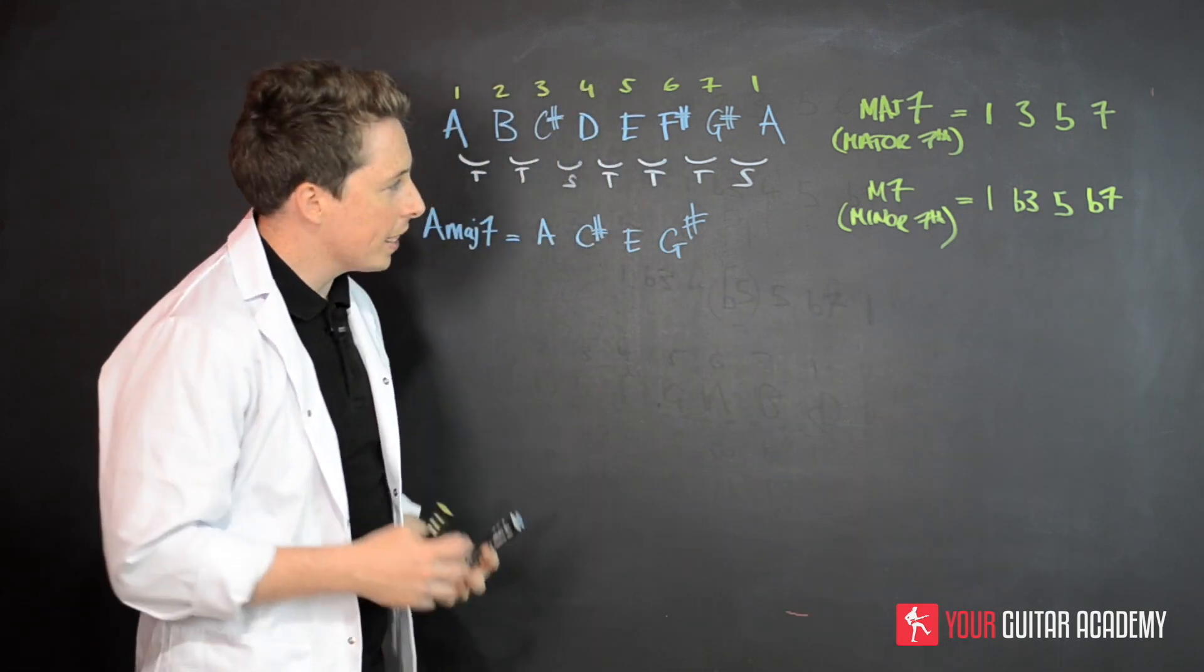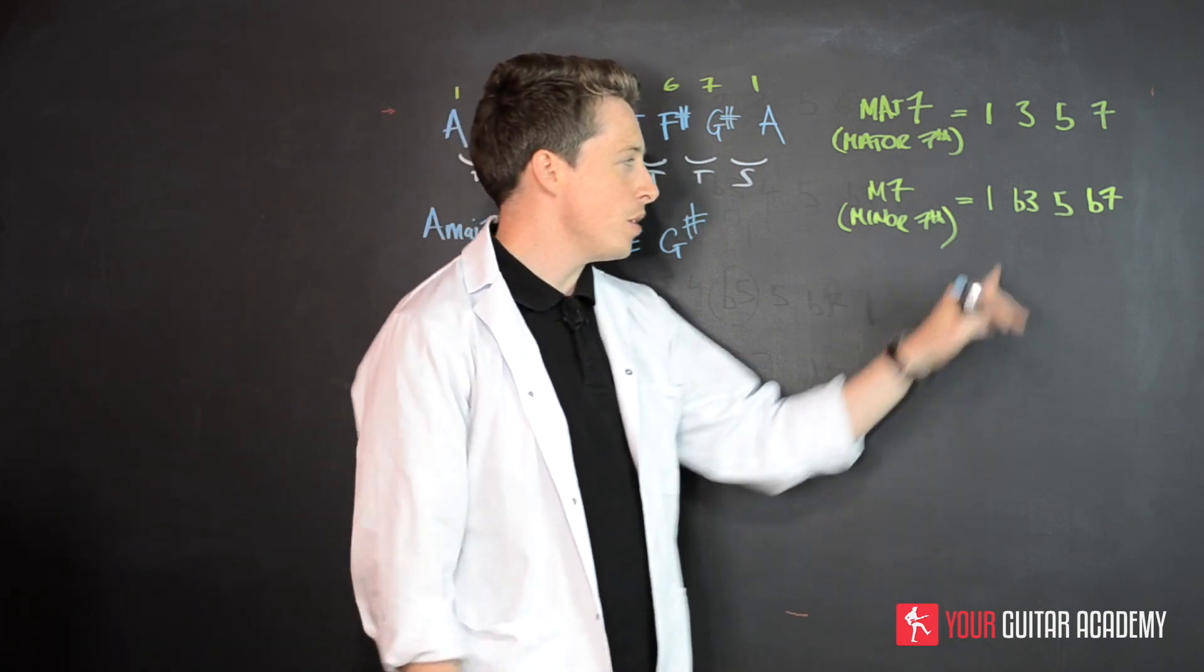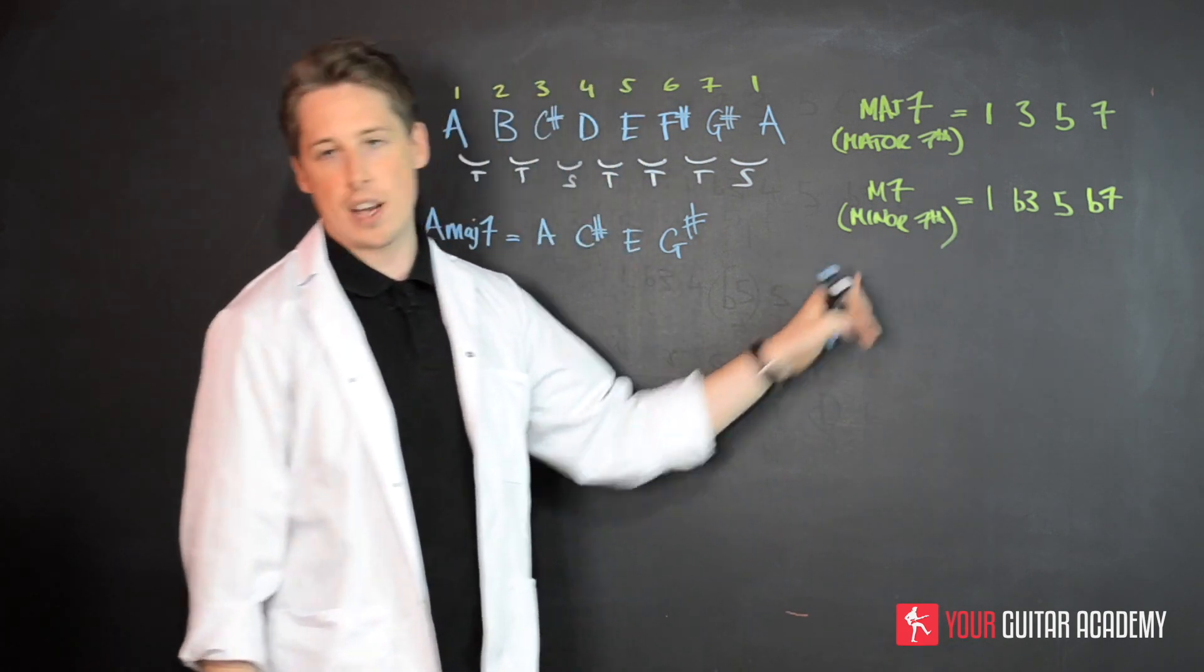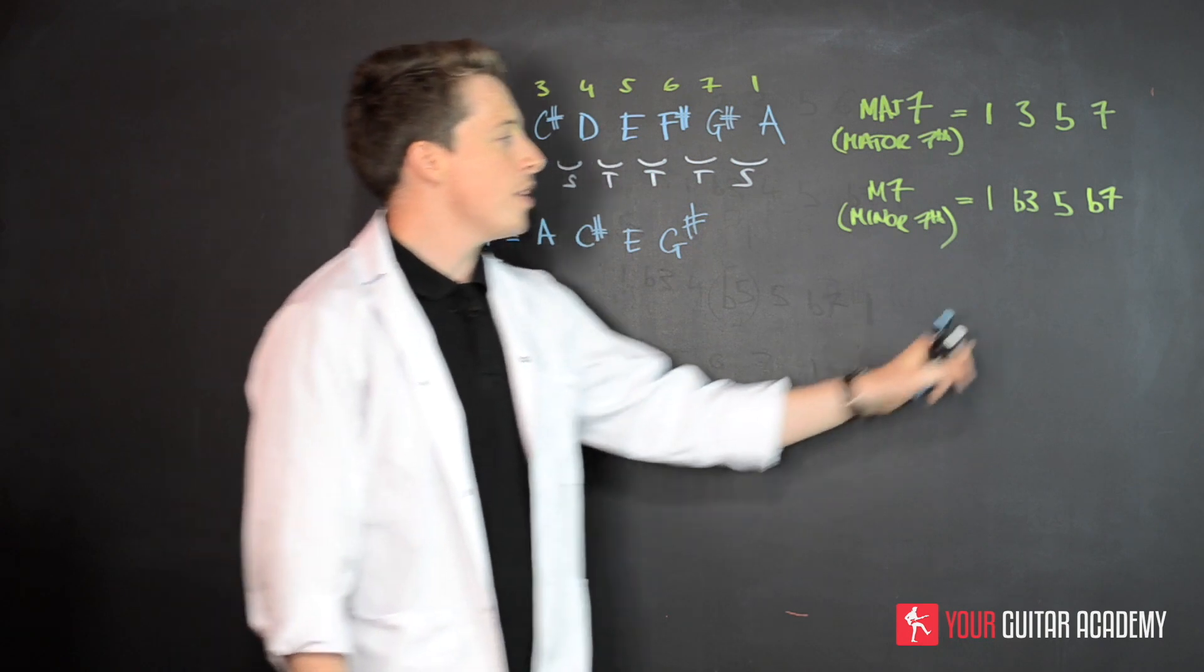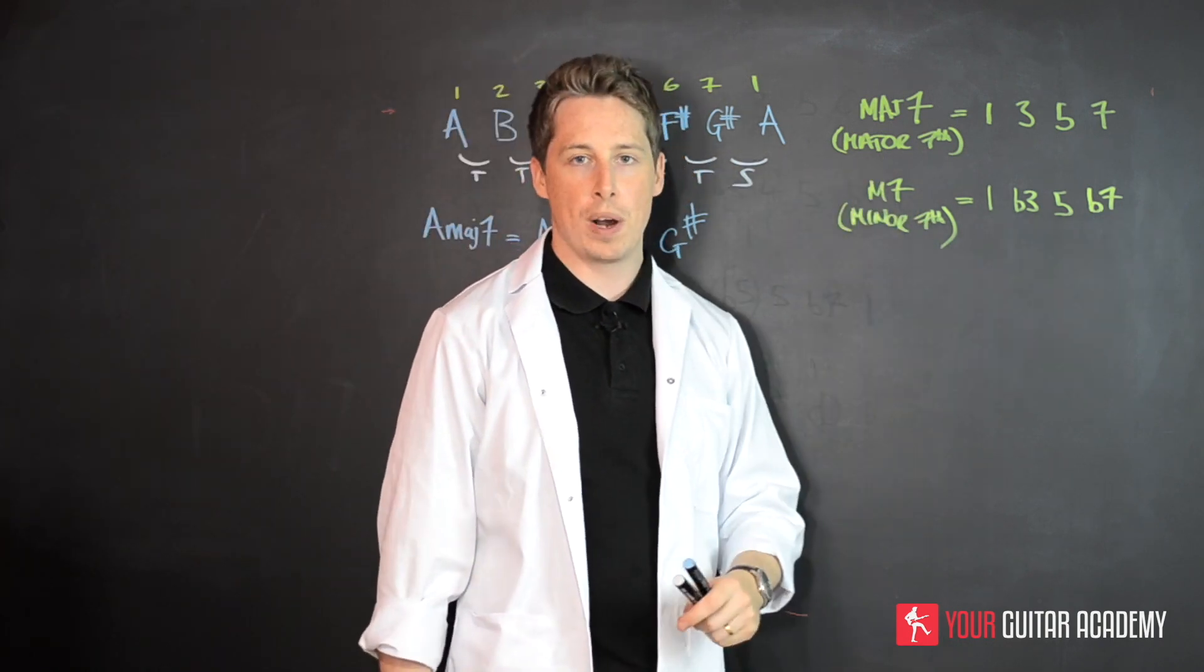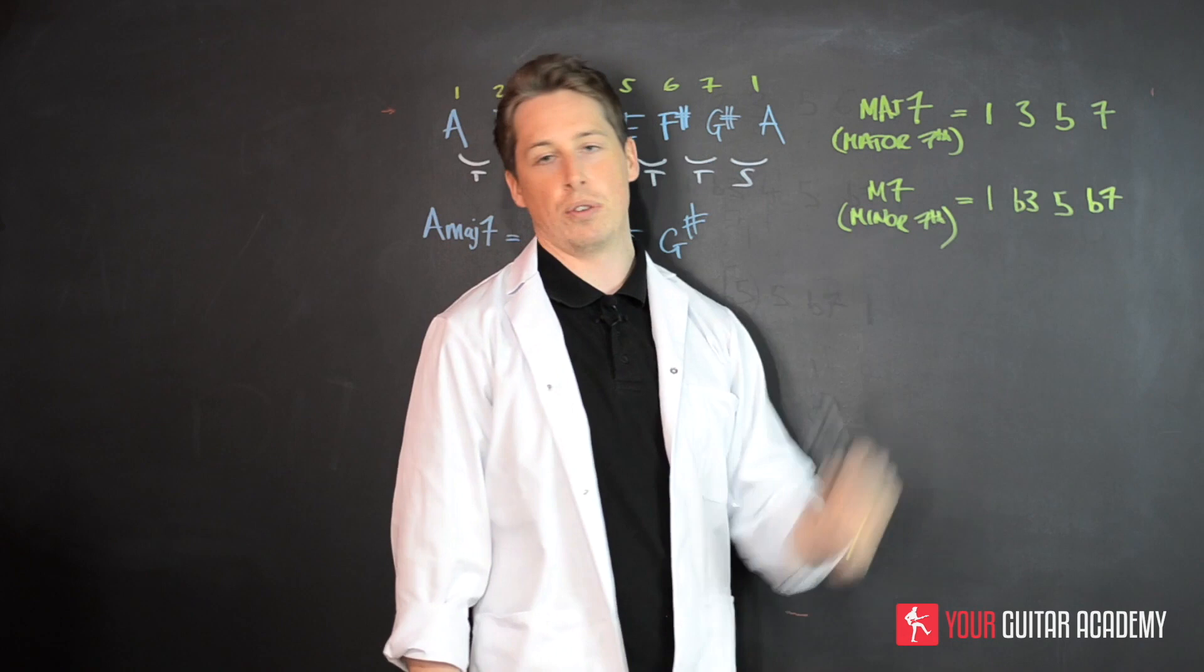I think it's relatively easy to remember that you just flatten the third because you should already know the minor triad, and then you've just got to stick in your brain that you use a flat seven as well, rather than a natural seven.